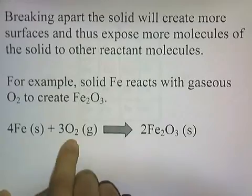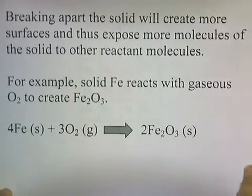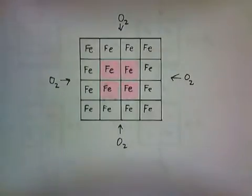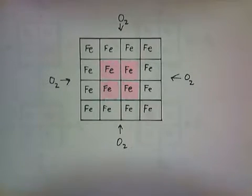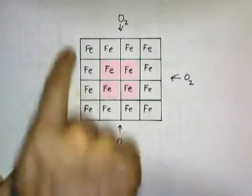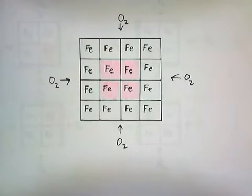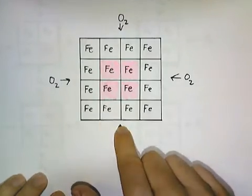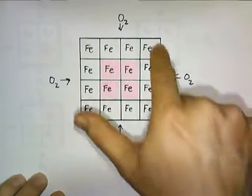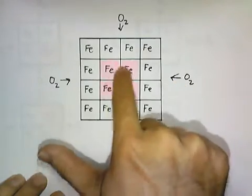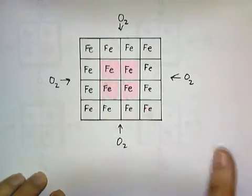So iron has to react with oxygen to form this species. This picture is a two-dimensional diagram of oxygen molecules surrounding a solid piece of iron. Oxygen can collide with four surfaces. The iron atoms highlighted in pink are below the surface of the block, so the oxygen molecules are unable to react with them. The oxygen atoms can collide with the iron on the surface, but they cannot reach the pink ones beneath — those other atoms are in the way.